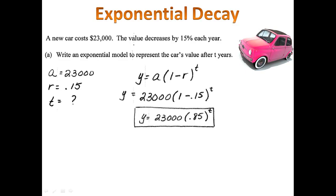Now I can make it a little nicer. I can do the 1 minus 0.15 that's inside the parentheses to end up with y equals 23,000 times 0.85 to the t.